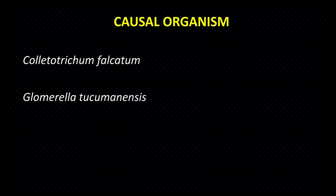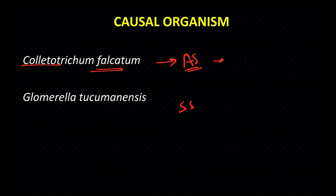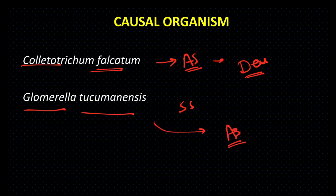The causal organism of red rot is Colletotrichum falcatum. Its sexual stage is Glomerella tucumanensis. Colletotrichum falcatum belongs to sub-division Deuteromycotina, while Glomerella tucumanensis also belongs to sub-division Deuteromycotina.